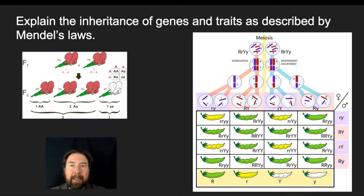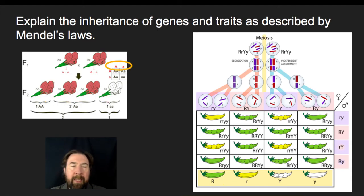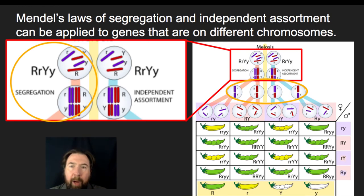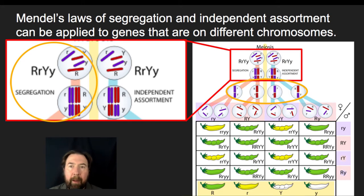The second law is the law of segregation, which also ties to our red and white flowers. An individual with a big A and a little a will sometimes pass on the big A and sometimes the little a. The formation of those gametes is the segregation of big A from little a, so that only half of the genetic information is passed on to the next generation. We can also tie this to meiosis, where big R and little R, and big Y and little Y, segregate from one another so that each gamete gets either big R or little r.